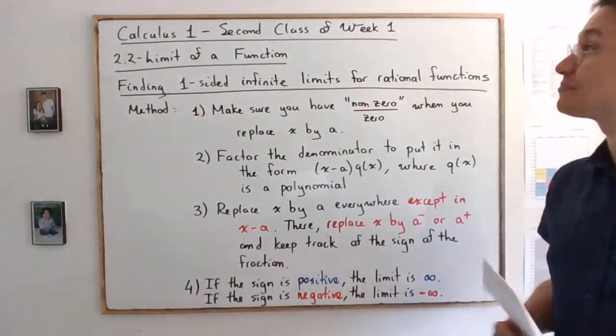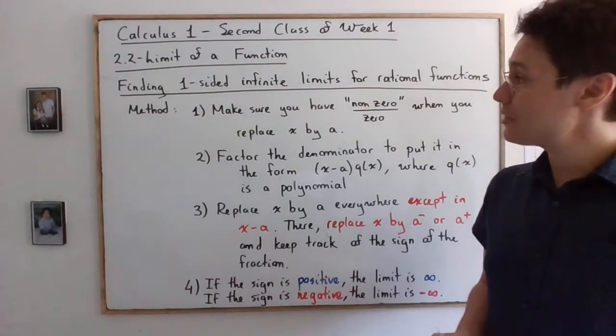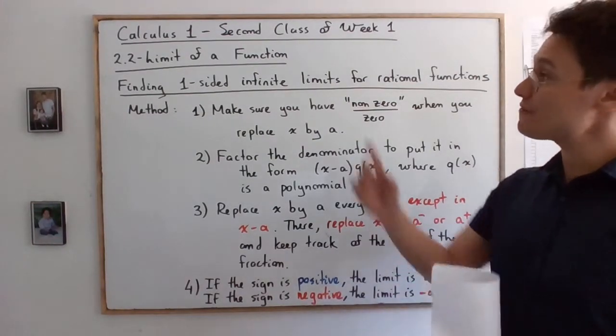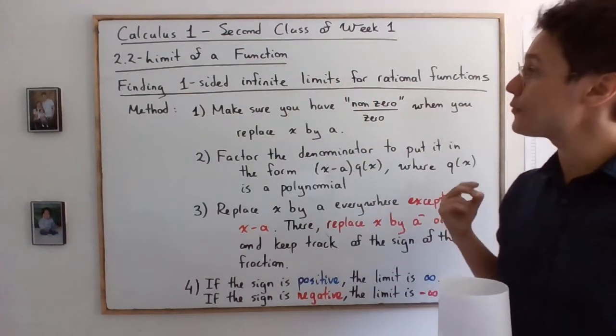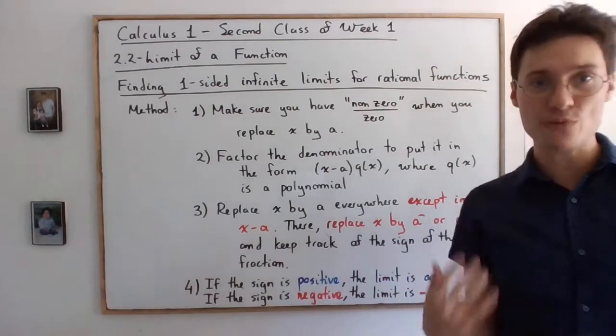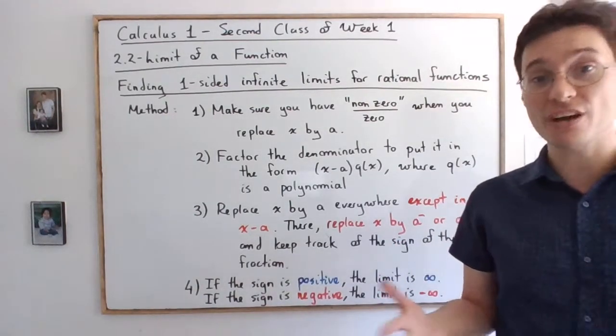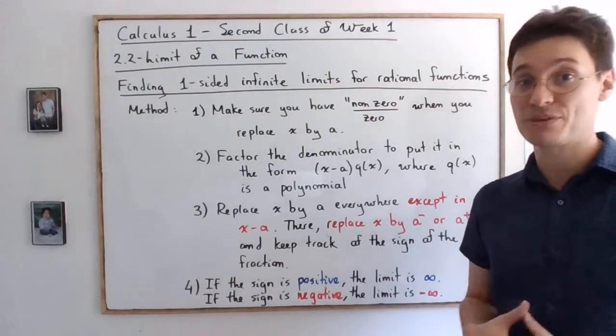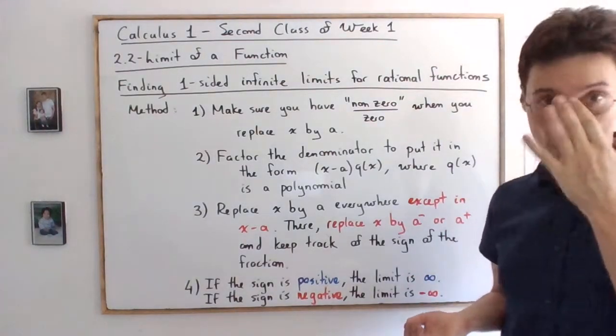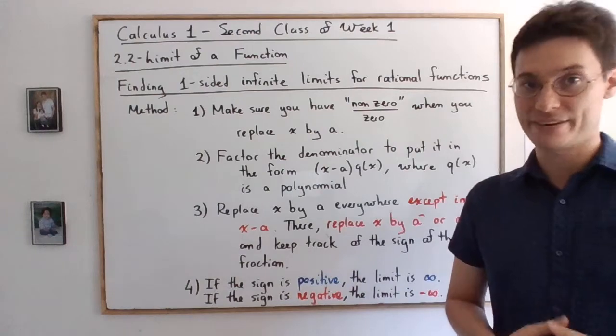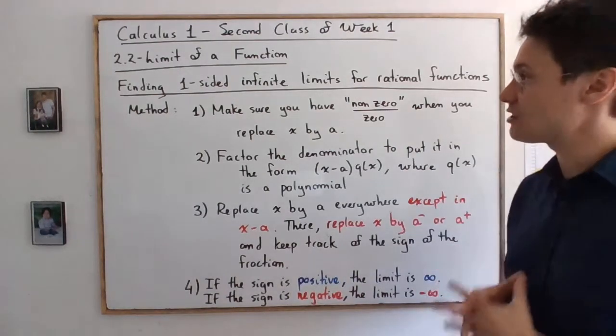Hi Calculus 1 students! So now what we're gonna do is we're gonna find one-sided limits for rational functions. We're going to start with rational functions, but as you know rational functions are not the only thing that have vertical asymptotes. We also have logarithmic functions. We will come to that later, but for now just rational functions.